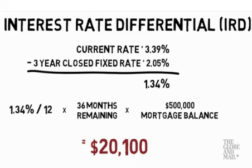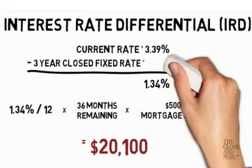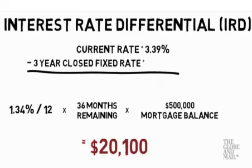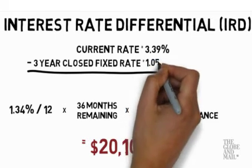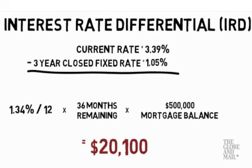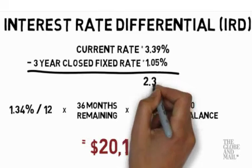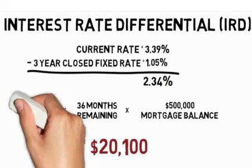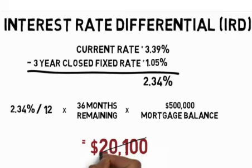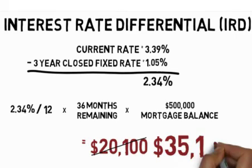Some lenders factor in the discount you received off posted rates initially, and this can affect your penalty greatly. If you originally received a 1% discount off posted rates, they may apply that same discount off the three-year rate used in the calculation, which was 2.05%, but would now be 1.05%. Subtracting 1.05% from 3.39% gives a bigger spread of 2.34%, resulting in a penalty of $35,100.